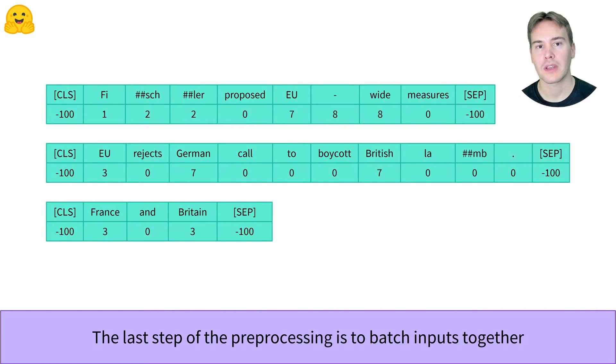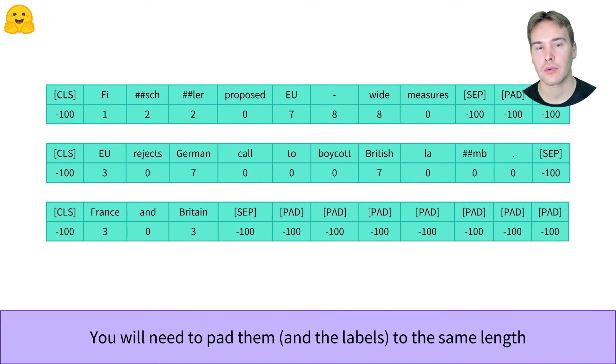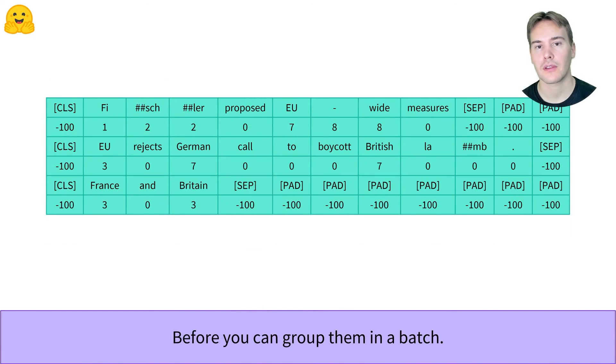The last problem comes when we need to create a batch. Unless you change the preprocessing function to apply some fixed padding, we will get sentences of various lengths which we need to pad to the same length. The padding needs to be applied to the inputs as well as the labels, since we should have one label per token. Again, minus 100 indicates the labels that should be ignored for the loss computation.